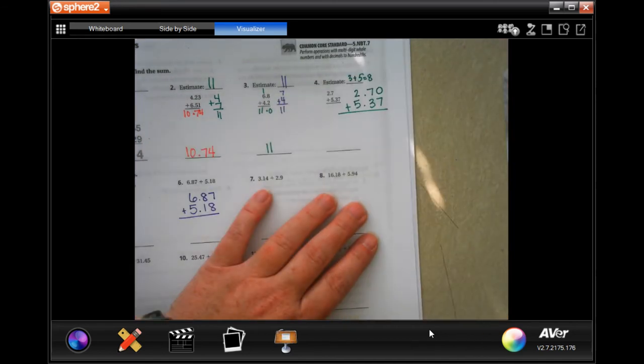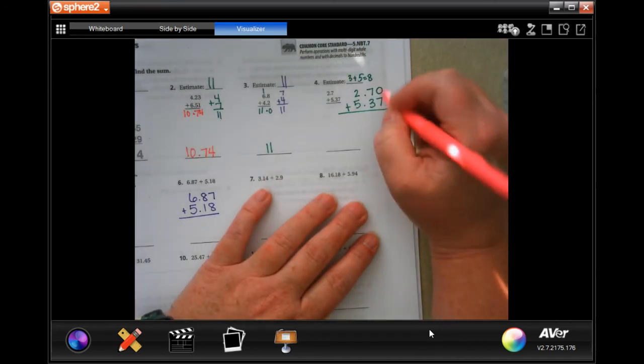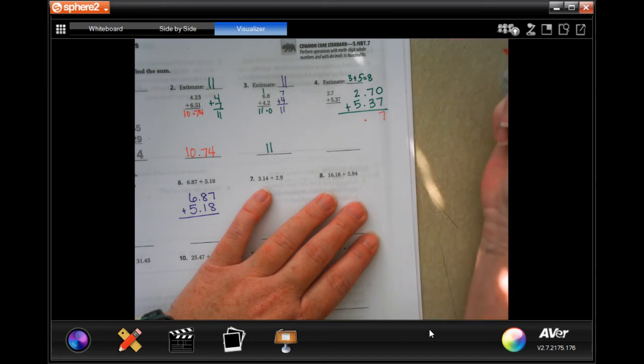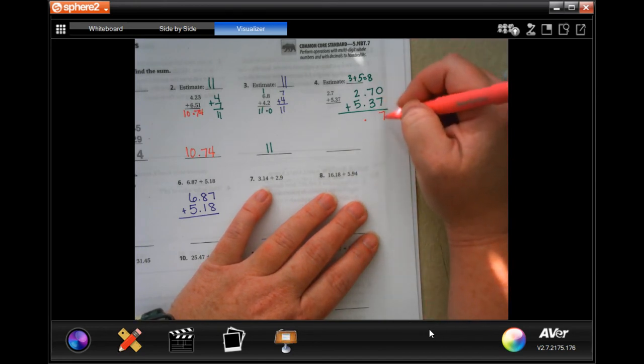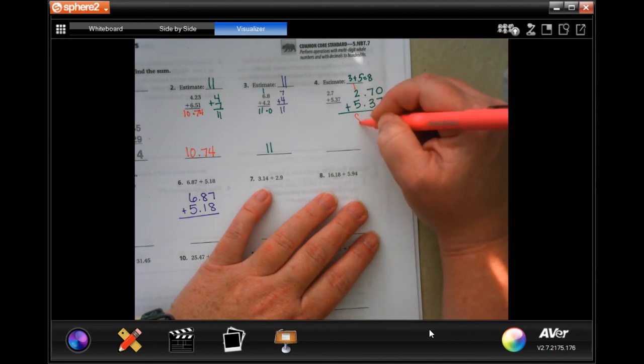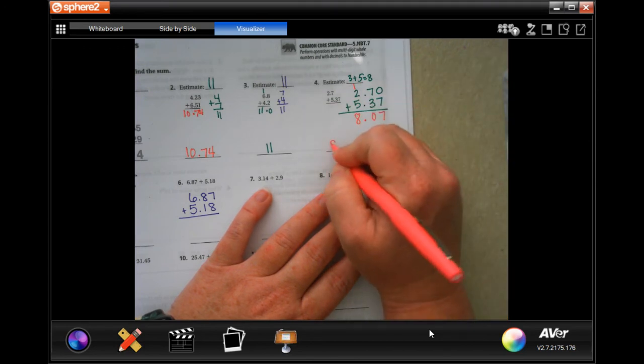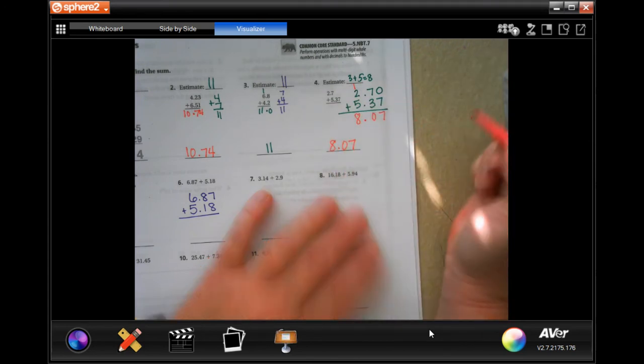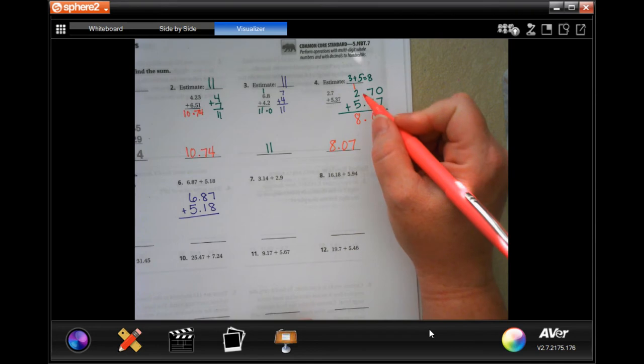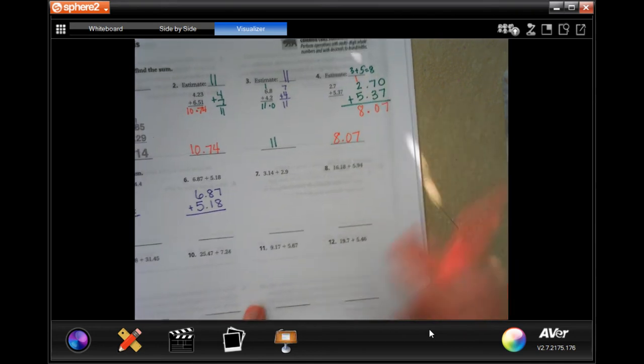Now we're going to do the math. So 0 plus 7 is 7. Oh, I didn't drop down my decimals. See, guys? So 0 plus 7 is 7, 7 plus 3 is 10, carry the 1. 1 plus 2 is 3, plus 5 is 8. Your actual answer is 8.07. Just because they're not lining them up doesn't mean you can't.